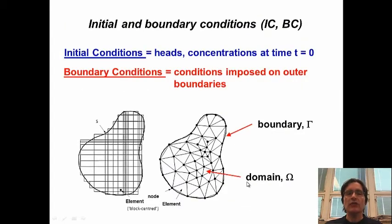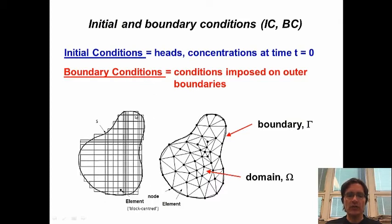Starting with initial and boundary conditions for our system — a common feature of any analytical or numerical model. The initial conditions are the unknowns — heads or concentrations — that must be defined at the initial time. The boundary conditions are conditions imposed on the outer boundary. Whether the system is 2D or 3D, we need to define conditions applied on the boundaries.